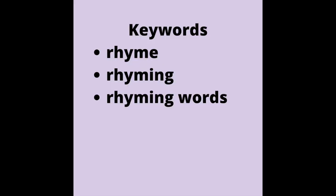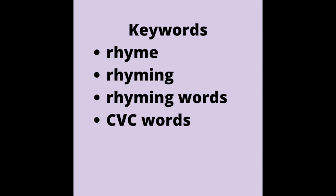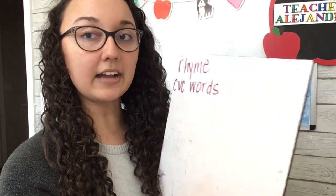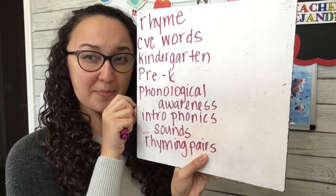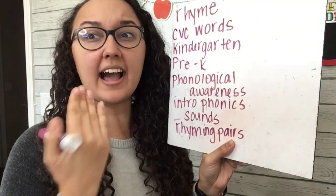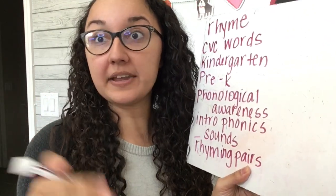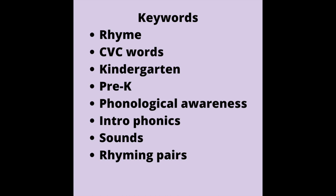This class is obviously about rhyming words, so I definitely want to include 'rhyme,' 'rhyming,' and 'rhyming words' in there. The rhyming words I'm focusing on are actually CVC words, so that might be another keyword I could include. On my whiteboard I've written down a few keywords — words I think someone might type in if looking for a class like this: rhyme, CVC words, kindergarten, pre-K, phonological awareness, introduction to phonics, sounds, and rhyming pairs. I really want to pick out some of those words and try to include them in either my title or my short summary.